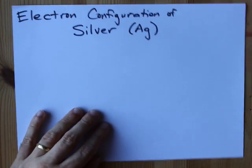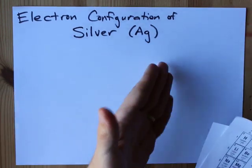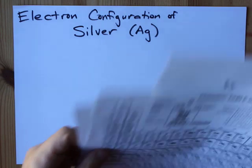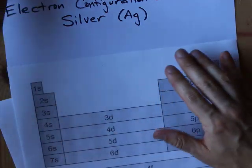In any case, silver is an exception to the rule because it ends with a d9. In that case it's going to shift itself around, but let's not put the cart ahead of the horse. Let's create the full electron configuration first.